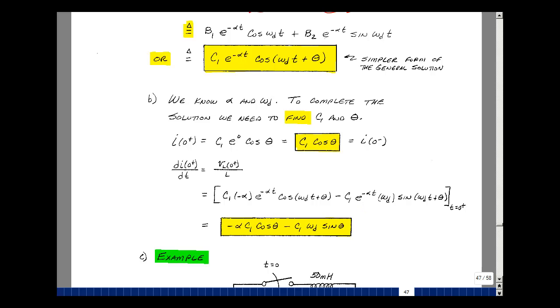We're going to evaluate this at t equals 0 plus, and this first term here then is going to be equal to -alpha*c1 times e^0, which is 1, and the cosine of 0 plus theta. And this term here is going to be c1*e^0, which is 1, times omega_d times the sine of 0 plus theta. So here's my second equation in the unknowns c1 and theta. I can use that to solve for c1 and theta with the previous equation.